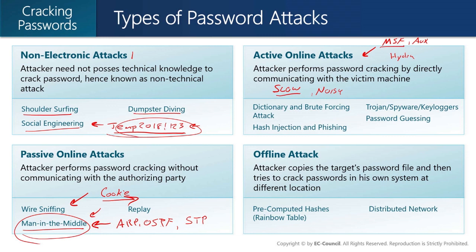What's going to be a little bit faster and stealthier — and we like stealth — is what we call offline attacks. An offline attack is where the attacker copies the target's password file and then tries to crack passwords on their own system at a different location. When you create a user account and set up a password, the operating system takes the password and forms a hash of it. A hash is also known as a digest.